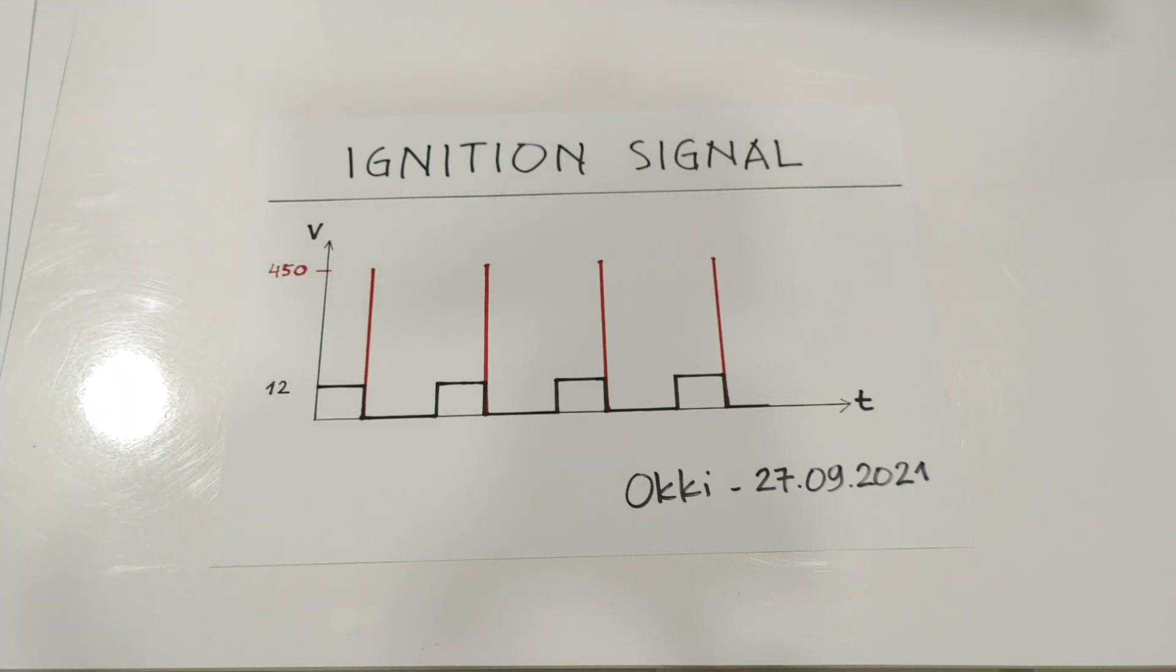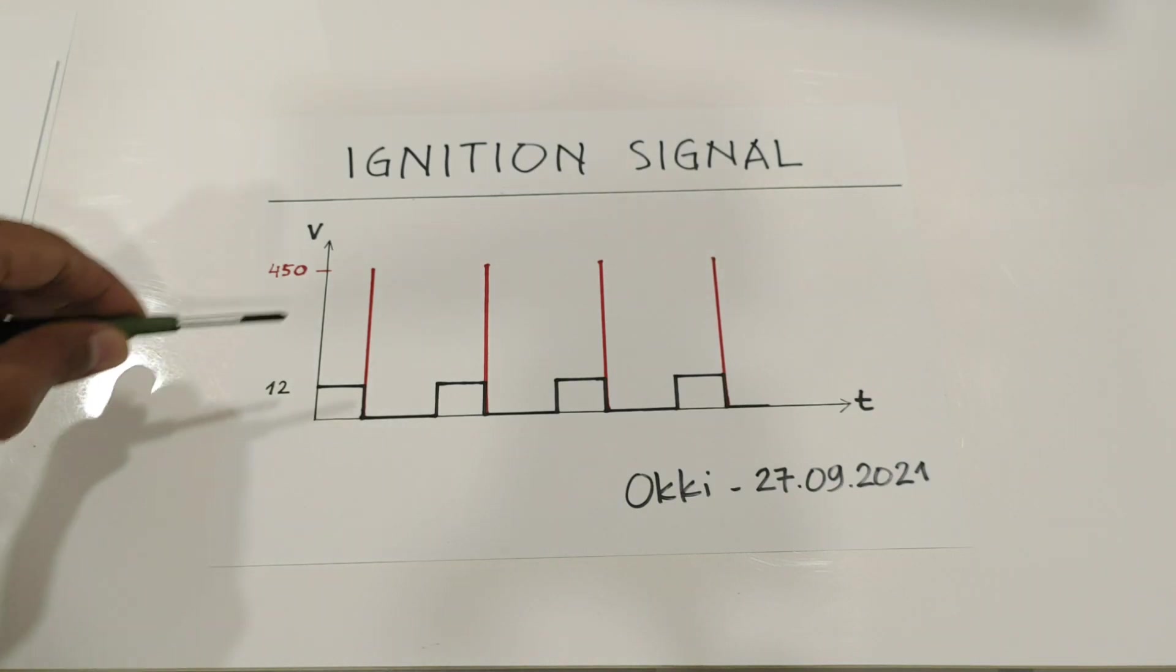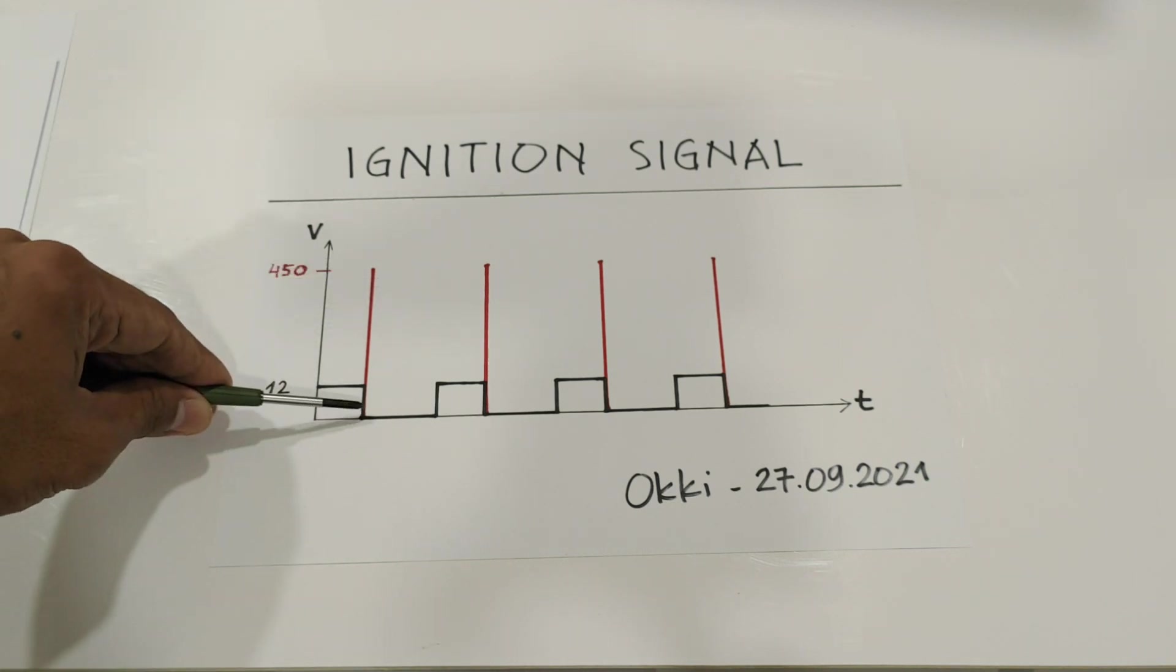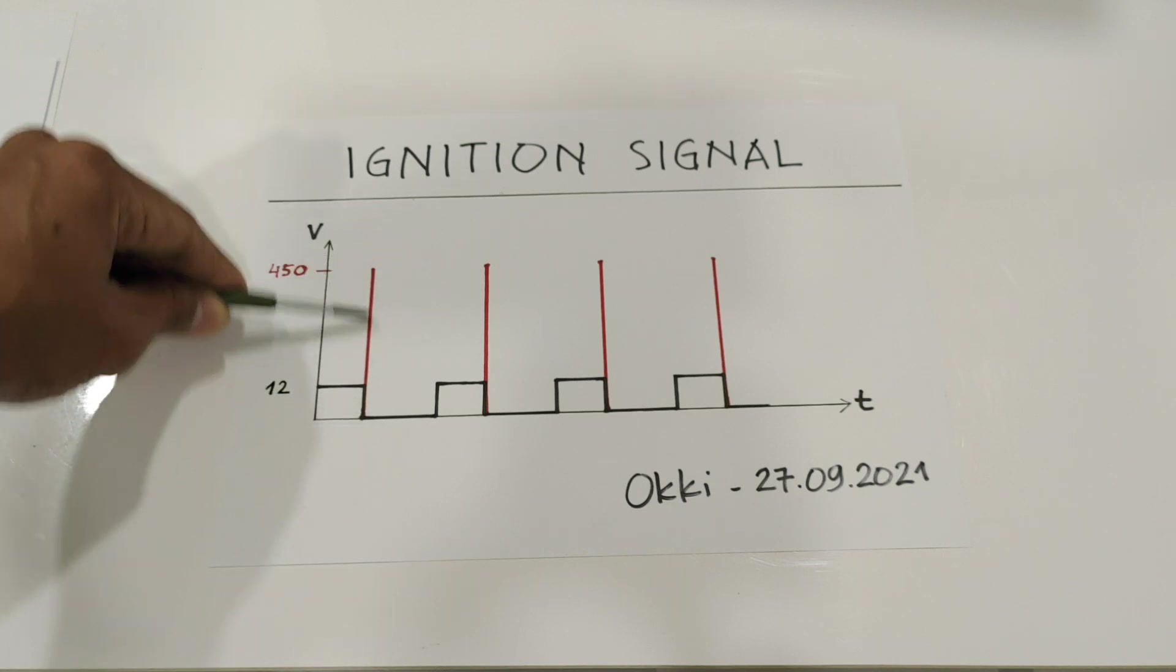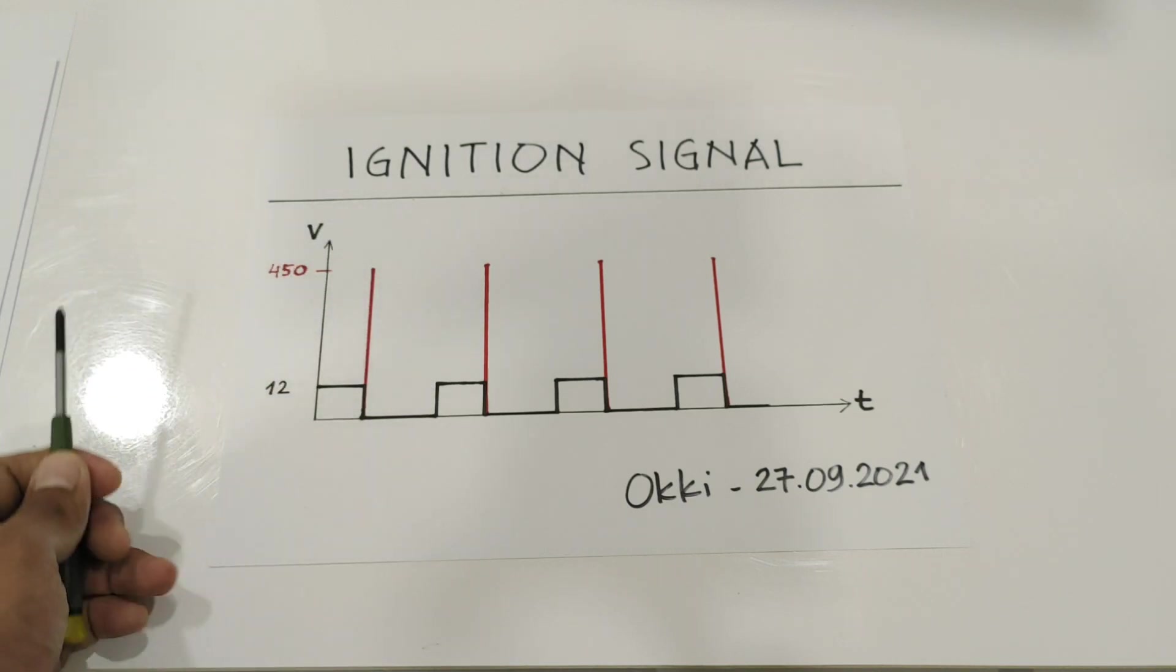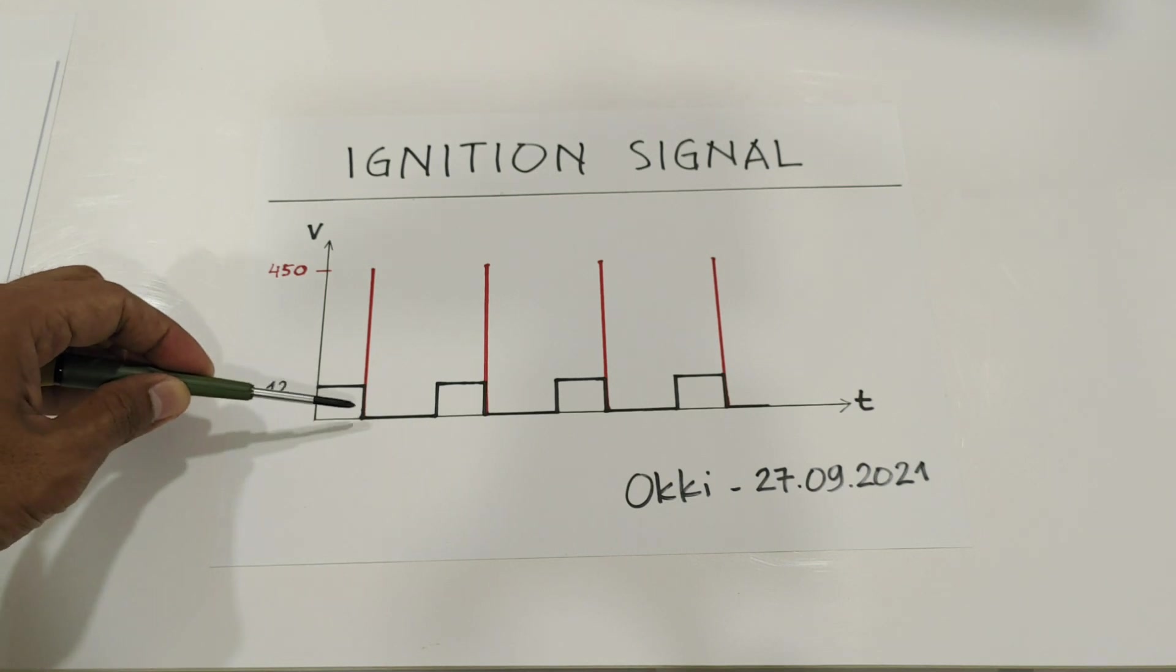So my CDI module can fire at this position or at this position. It depends on the setting of the jumper. Normally we want to have spark at this point.